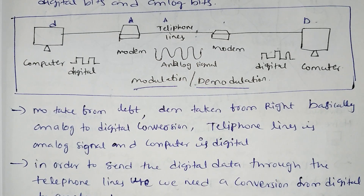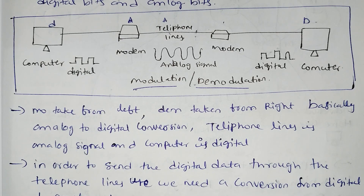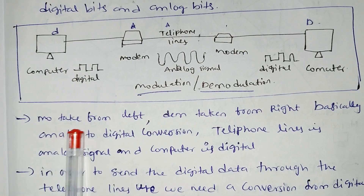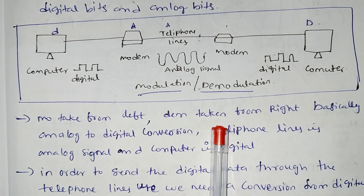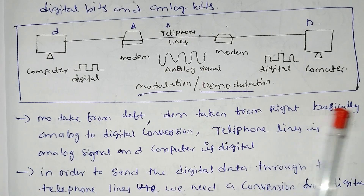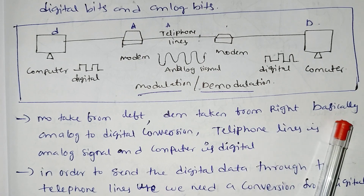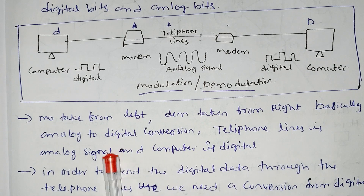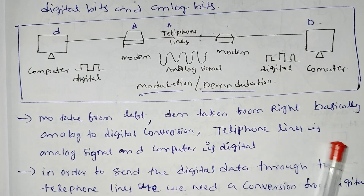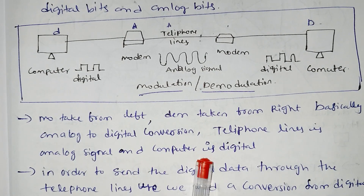Modem is modulation and demodulation — it converts analog to digital signals. Modulation takes from the left side and demodulation takes from the right side. Basically, this is analog to digital conversion. Telephone lines are analog and the computer is digital.